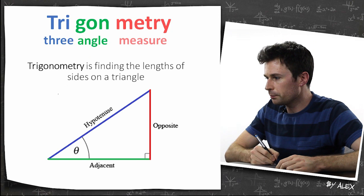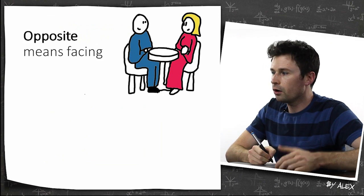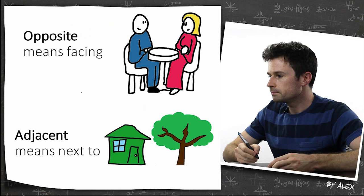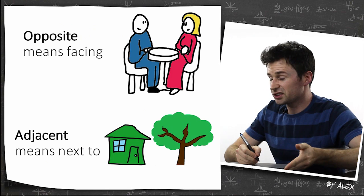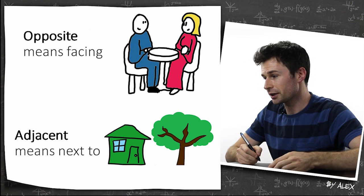You've probably seen one of these things before with your adjacent, opposite, and hypotenuse. Opposite just means facing—so right now I'm facing you. Adjacent just means next to, so that house is next to the tree, or the house is adjacent to the tree.